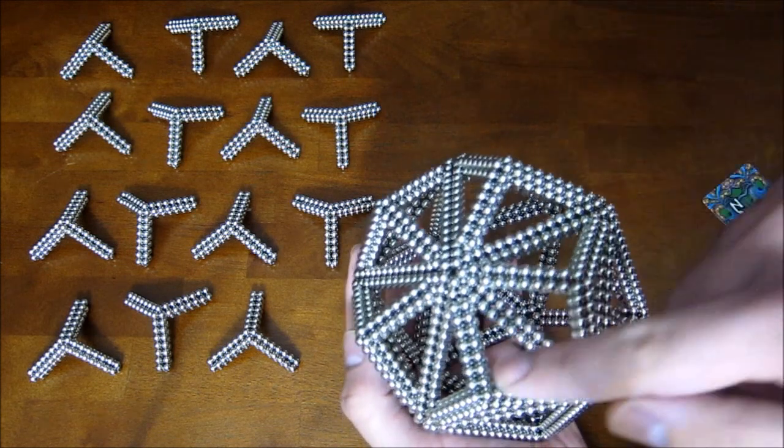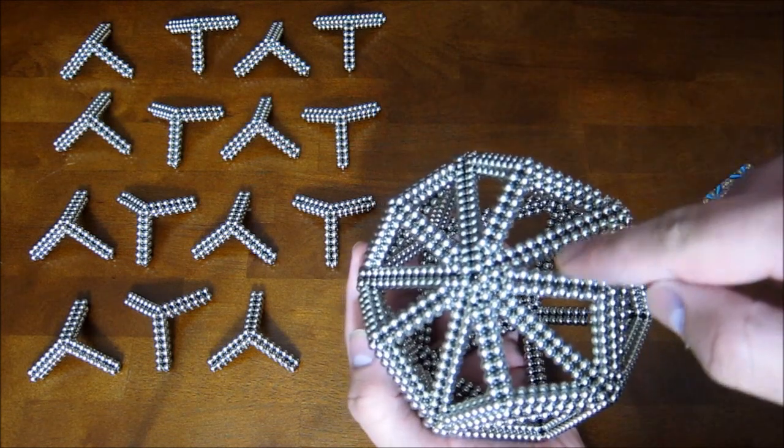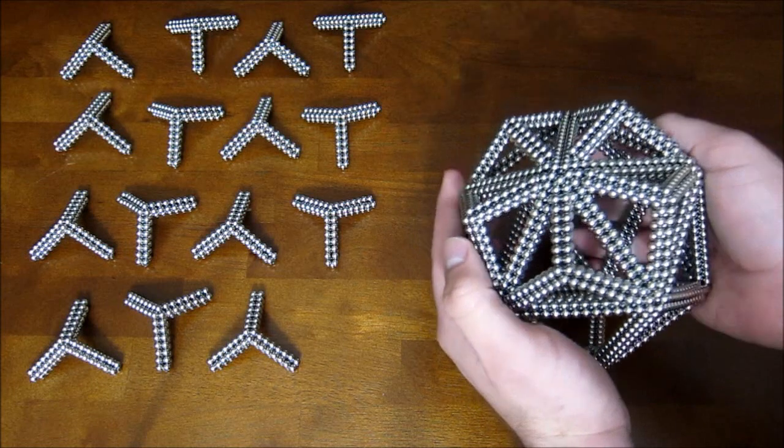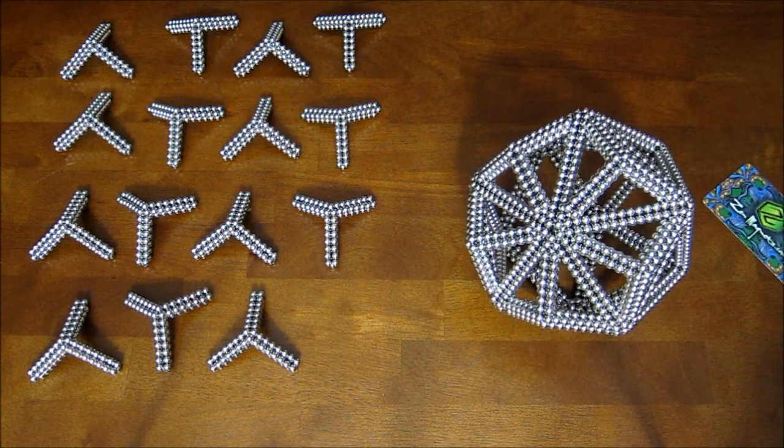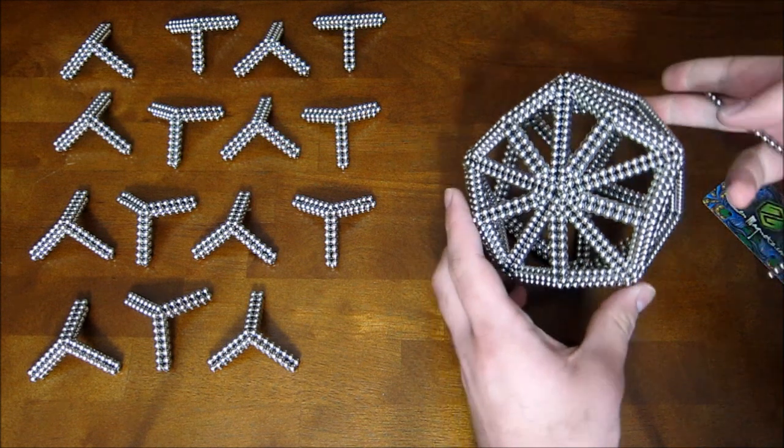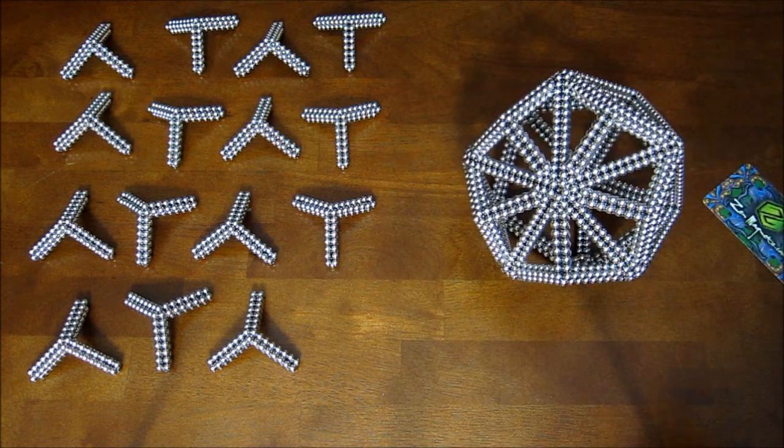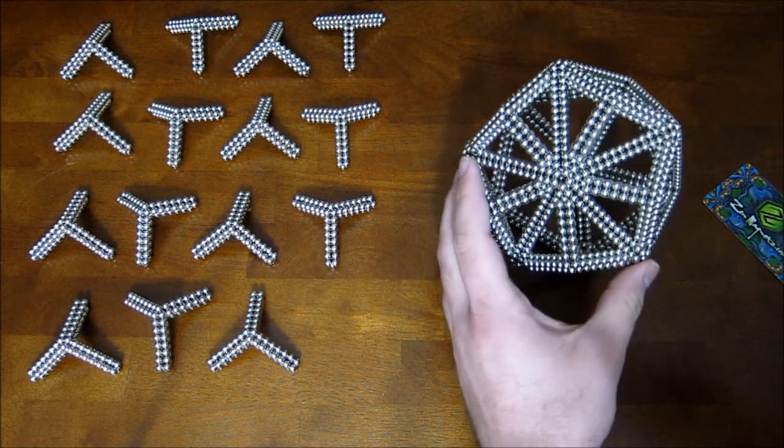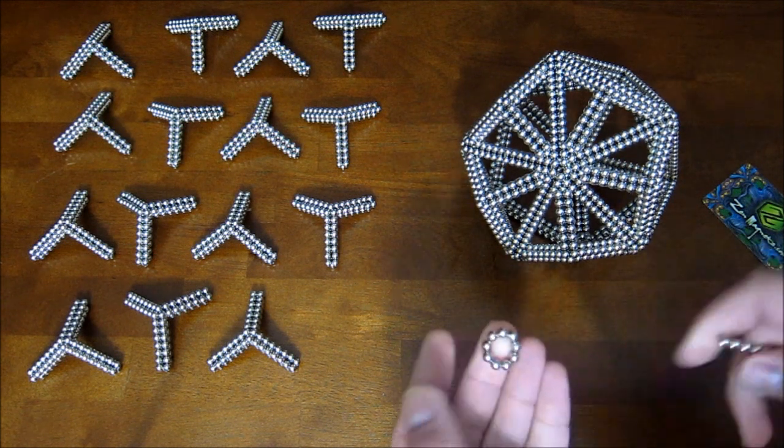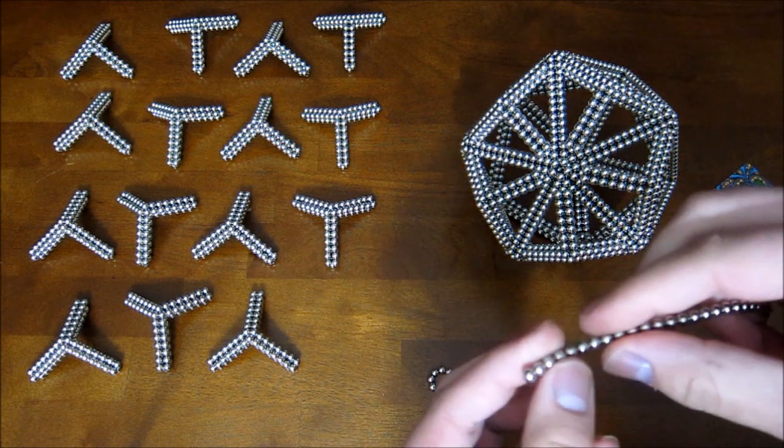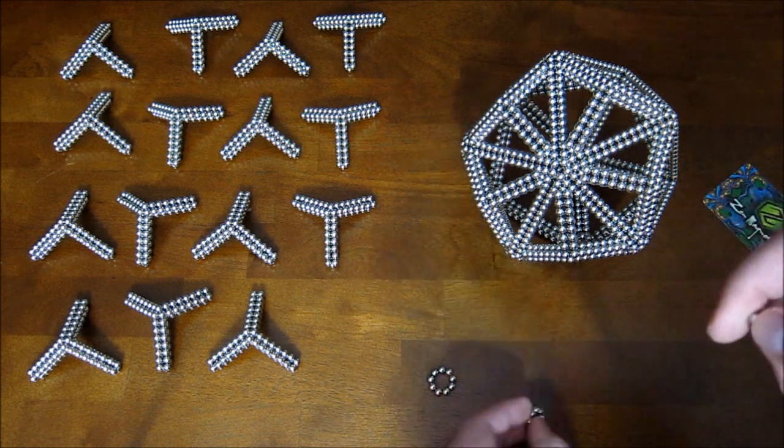Okay, now once you've completed five faces that are all surrounding one corner, you want to stop for just a second because you need to do something special just to these five to create a flat surface for this to stand on when it's done. And all you need to do is make rings of nine magnets. And you need five of those rings.